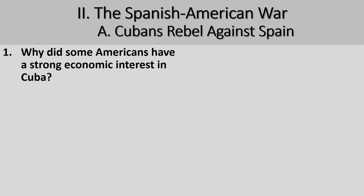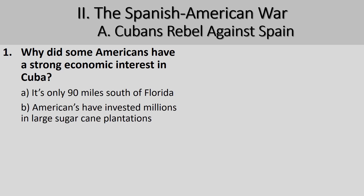As we look at the Spanish-American War, we realize that this really starts with Cuban rebels fighting against Spain. Why did Americans have a strong economic interest in Cuba? Well, the U.S. has had an interest in Cuba for quite some time, even the early 1800s, mostly because it simply lies so close to Florida — 90 miles south of Florida.